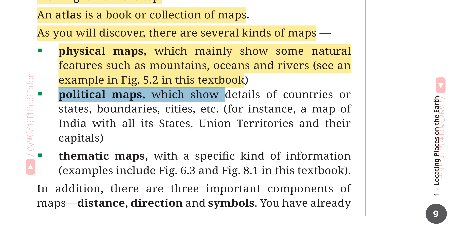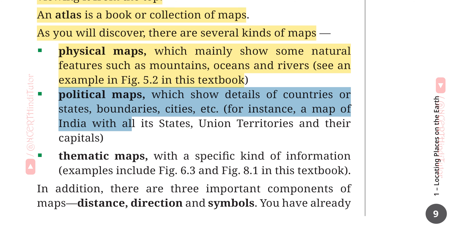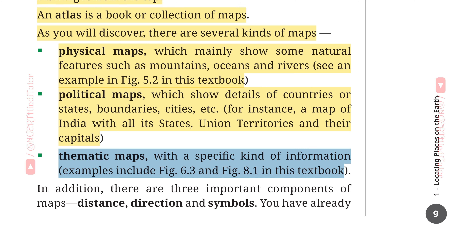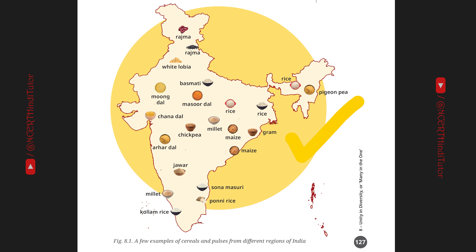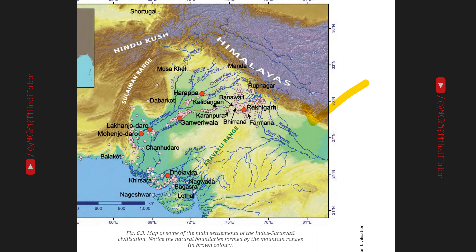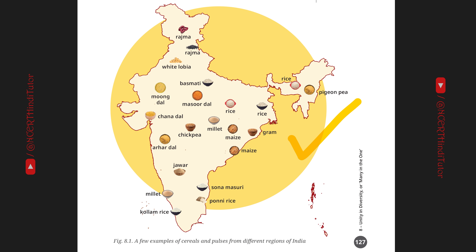Second, political maps, which show details of countries or states, boundaries, cities, etc. — for instance, a map of India with all its states, union territories and their capitals. दूसरा, राजनीतिक नक्शे, जो देशों या राज्यों, सीमाओं, शहरों आदि का विवरण दिखाते हैं। Next, thematic maps, with a specific kind of information — examples include figure 6.3 and figure 8.1 in this textbook. Thematic नक्शे जिनमें विशिष्ट प्रकार की जानकारी होती है।